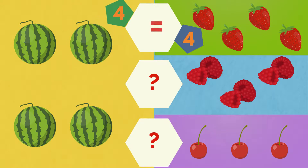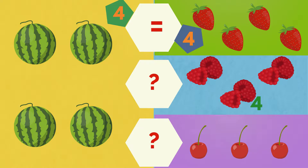The watermelons are the same number as the strawberries. One. Two. Three. Four. Five. Six. Six raspberries. The watermelons are the same number as the raspberries.